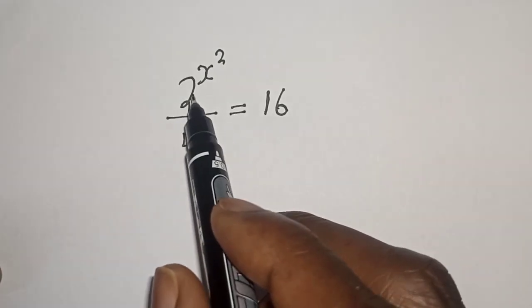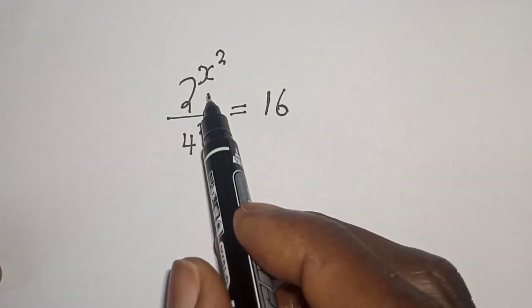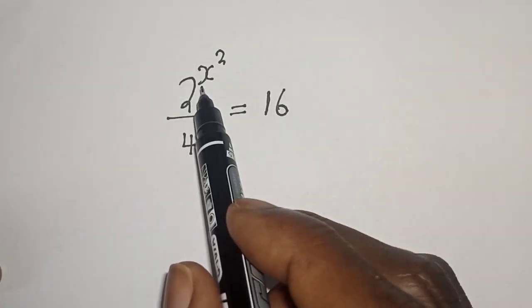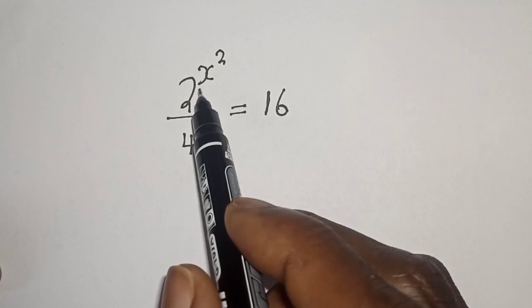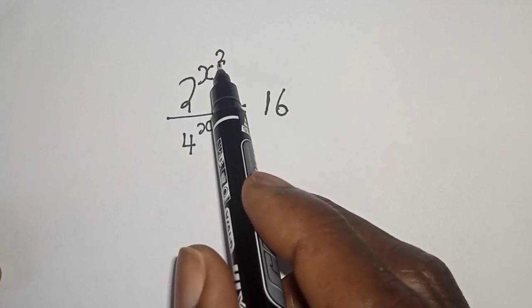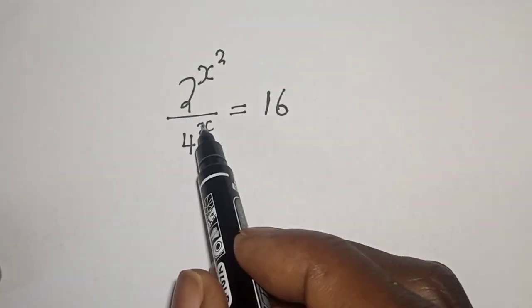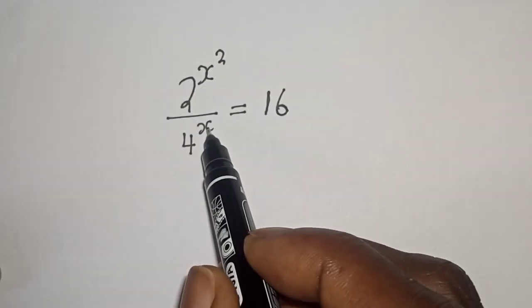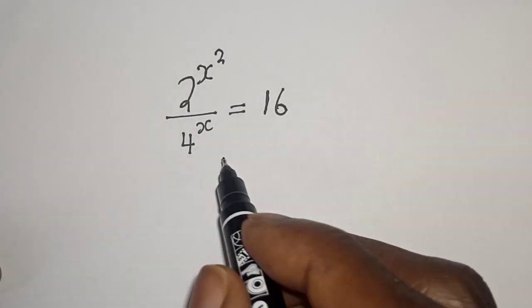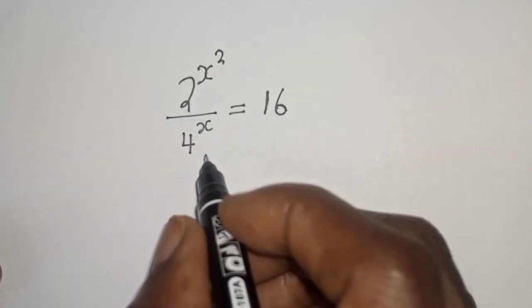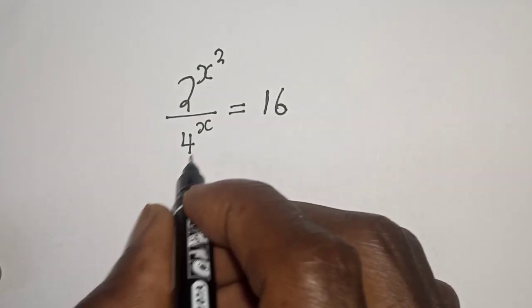Hello, welcome to Mathfocus. How to solve for s in this equation: 2 raised to power s squared divided by 4 raised to power s is equal to 16. Let's find the solution.